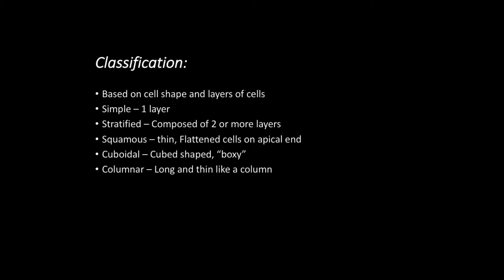Epithelial tissue is classified based on cell shape and the number of layers it has. The term simple means the tissue consists of one layer. The term stratified indicates it is composed of two or more layers. The term squamous indicates it has thin, flattened cells at its apical surface — the surface facing the lumen. The term cuboidal means these cells would be cube-shaped or boxy, and columnar would indicate that the apical cells are long and thin, like a column.